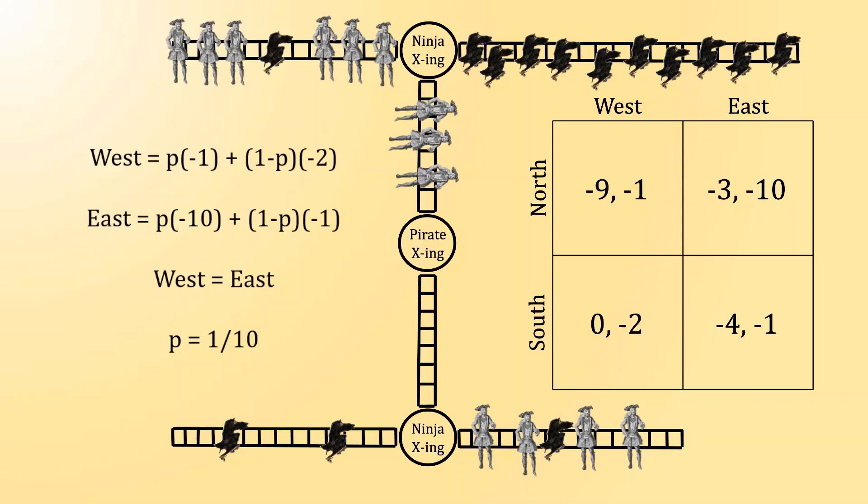And if you look down below, there are two ninjas to the west, and one ninja to the east. So if the ninja were to reliably play west, by choosing south the majority of the time, the pirate has ensured that the ninja will regret that decision.